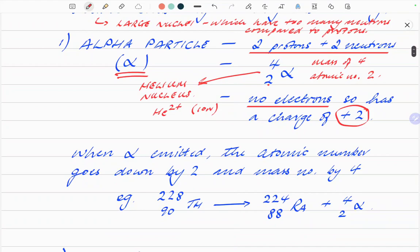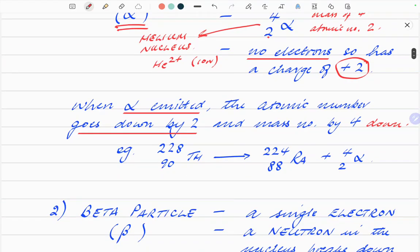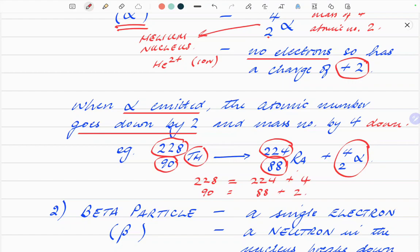The important thing about alpha is when an alpha is emitted, the atomic number of the nucleus goes down by 2 and the mass number goes down by 4. An example here is thorium 228 with atomic number 90. That will decay to becoming radium 224 with atomic number 88 and an alpha particle. Notice how 228 equals 224 plus 4 and the 90 equals 88 plus 2. So it all balances.